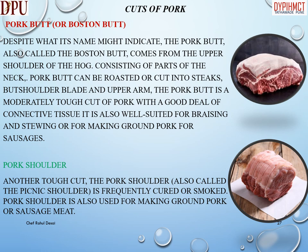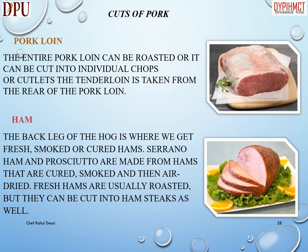Pork shoulder, also called the picnic shoulder, is another tough cut that is frequently cured or smoked. Pork shoulder is also used for making ground pork or sausage meat. Pork loin: the entire pork loin can be roasted, or it can be cut into individual chops or cutlets. The tenderloin is taken from the rear of the pork loin.